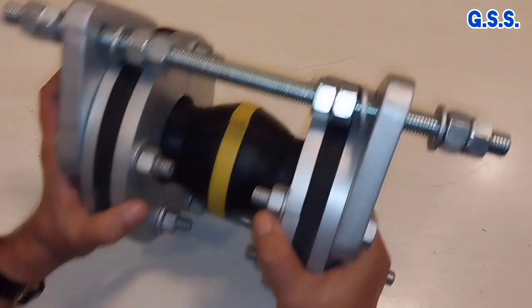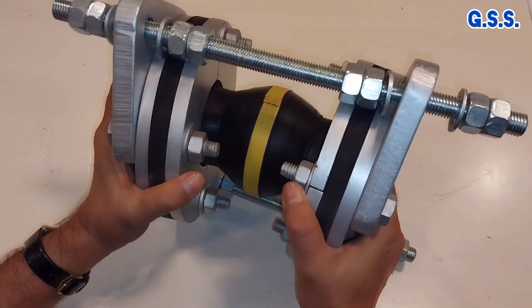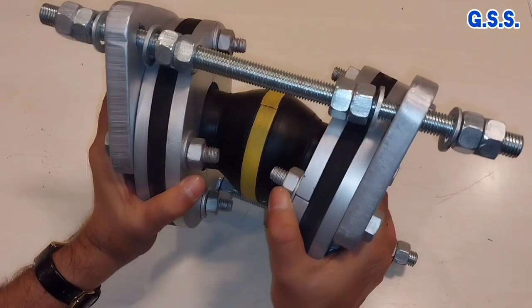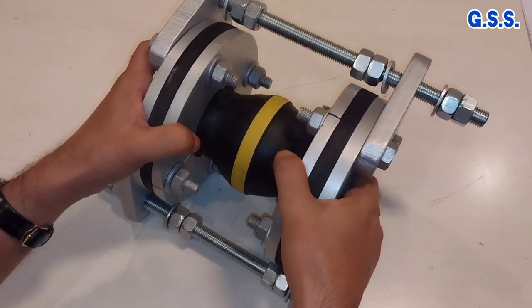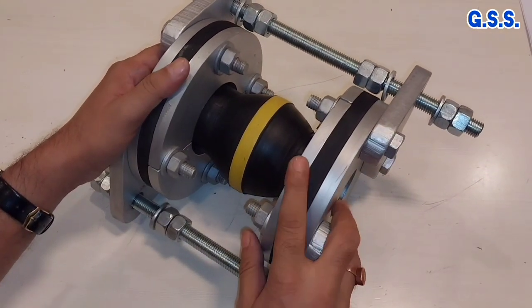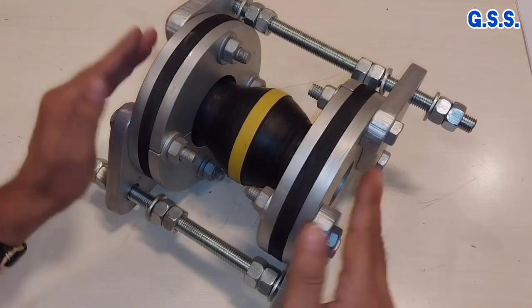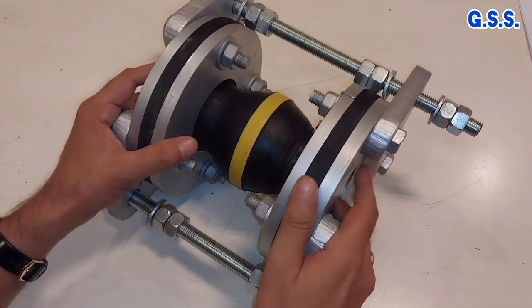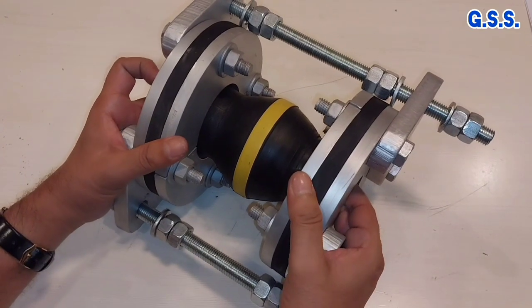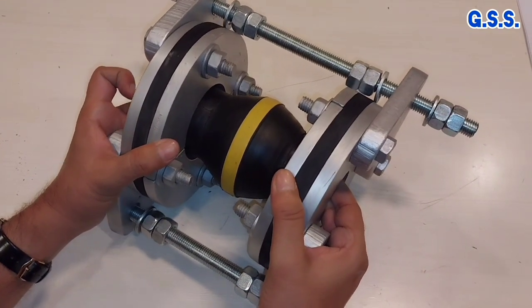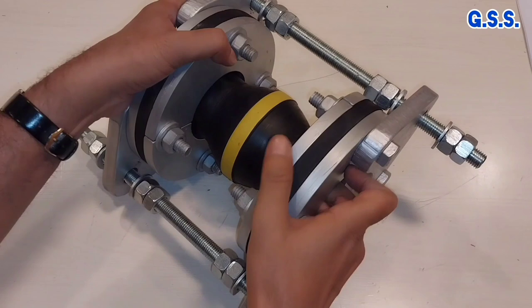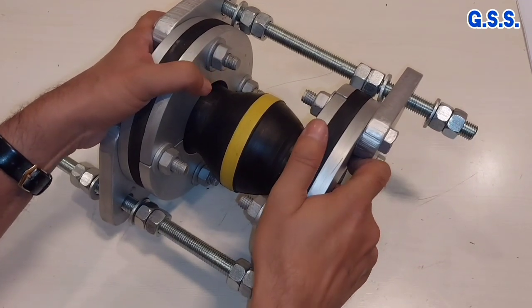And this is angular movement like this. Angular. So, this type of rubber bellow can take axial extension, axial compression, lateral deflection, angular movement like this. And also torsional movement like this.